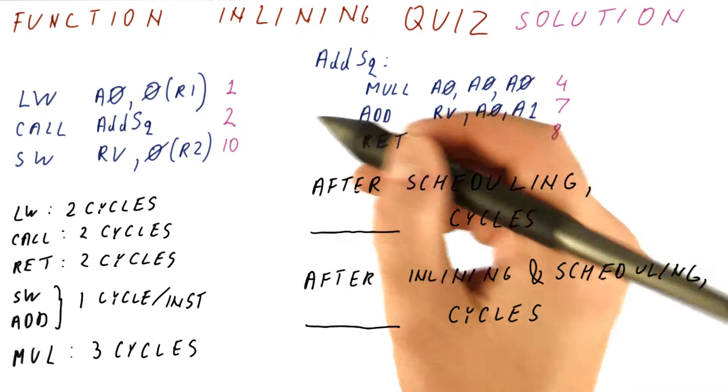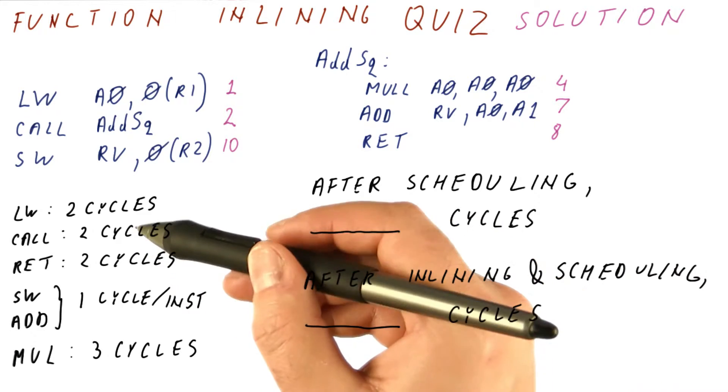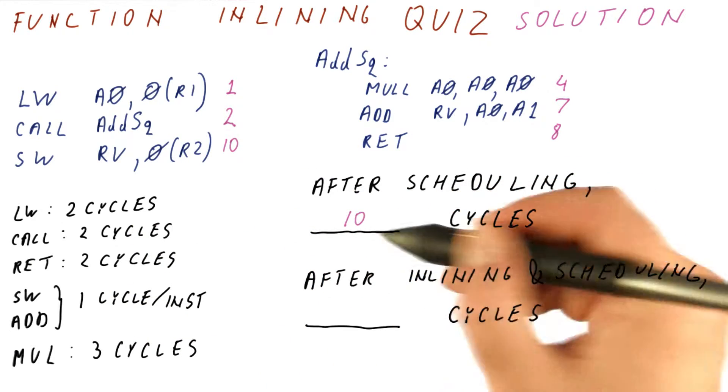And finally, in cycle ten, we are back here. And then the store, of course, takes only one cycle. So after ten cycles, we are done.